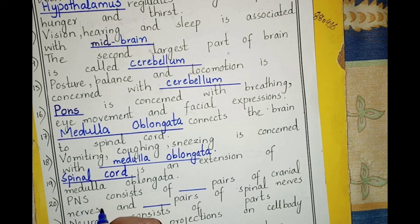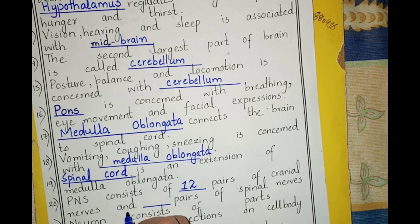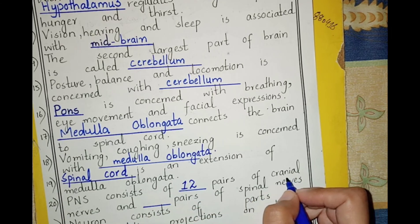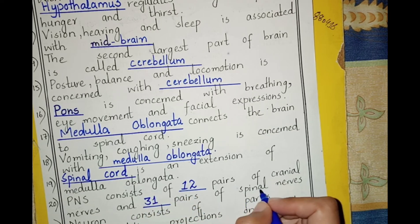The peripheral nervous system consists of 12 pairs of cranial nerves. Cranial nerves are those nerves that are present in the head and neck region. We have 31 pairs of spinal nerves, which are present in the spinal cord.